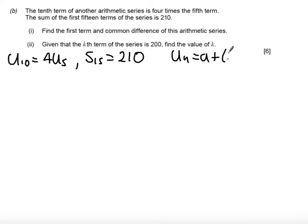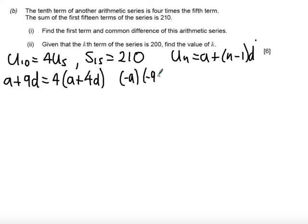I'm going to use un equals a plus n minus 1 times d to form an equation with that first piece of information. So I get a plus 9d equals 4 times a plus 4d. Now if I collect all the a's and d's on the right hand side what we're going to get is if I subtract a from both sides and I subtract 9d from both sides we're going to get left with 3a plus 7d equal to 0.